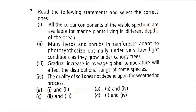Next: read the following statements and select the correct ones. One: all color components of the visible spectrum are available for marine plants living in different depths of the ocean. Two: many herbs and shrubs in rainforests adapt to photosynthesize optimally under very low light conditions as they grow under canopy trees. Three: gradual increase in average global temperature will affect the distributional range of some species. Four: the quality of soil doesn't depend upon the weathering process. The correct option is option C — both two and three. In deep water bodies, light zonation occurs, with zones categorized as littoral, limnetic, profundal, and benthic. Due to this, not all color components of the visible spectrum are available to marine plants, and some components like red have very poor penetration.